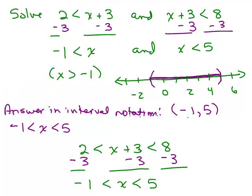Before going on, keep in mind that (-1, 5) is not an ordered pair — you have to look at the problem in context. We're looking at the solution to this compound inequality. Since these were strictly less than symbols with no equals, you end up using parentheses. It kind of looks like an ordered pair but it is not — it's a solution in interval notation.